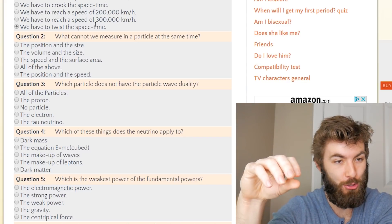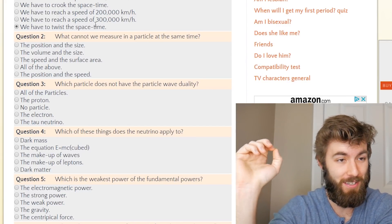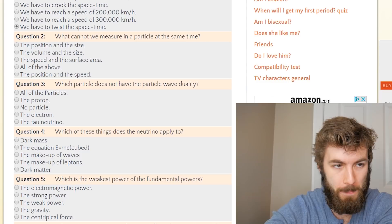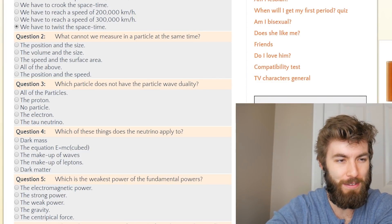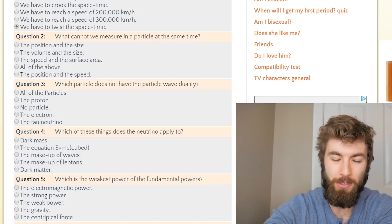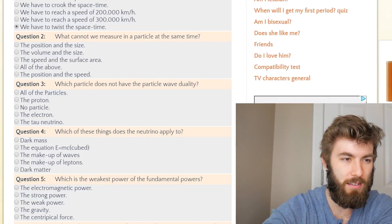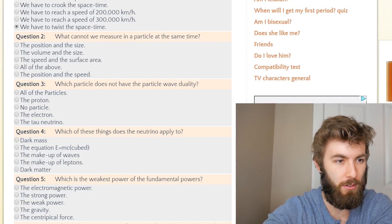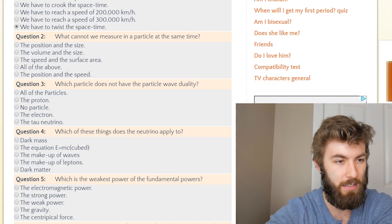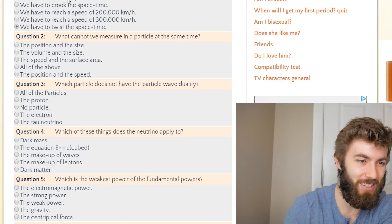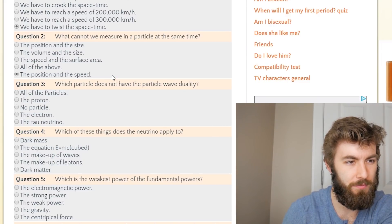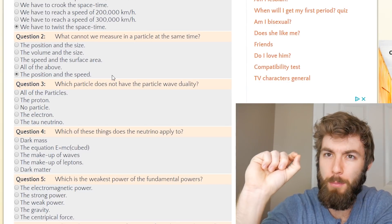What cannot we measure in a particle at the same time? This is a very high quality quiz. The position and the size, the volume and the size, the speed and the surface area, all of the above, and the position and the speed. I don't think that this quiz was made by a physics student because if you're talking about the uncertainty principle, who doesn't use position and momentum? I mean, I guess you could do speed if you wanted to, but you don't. But it's going to be that one, I'm assuming, right?